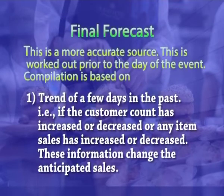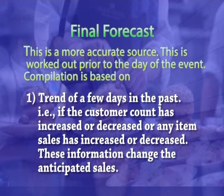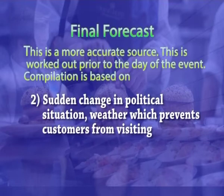Final forecast. This is a more accurate source, worked out prior to the day of the event. Compilation is based on the trend of a few days in the past — that is, if the customer count or any item's sales have increased or decreased. These factors change the anticipated sales. Sudden changes in political situation or weather which prevent customers from visiting also influence the quantities of food to be prepared and therefore the sales.